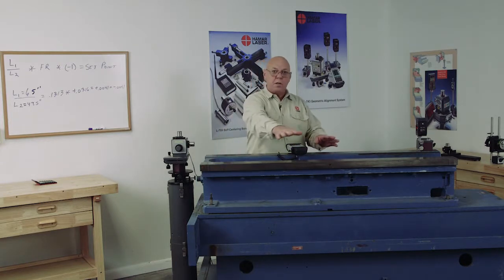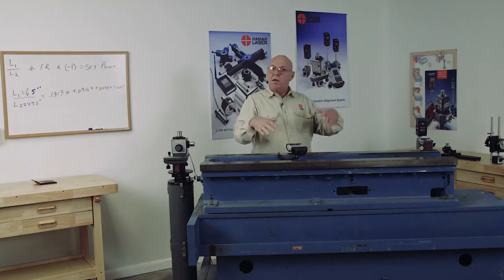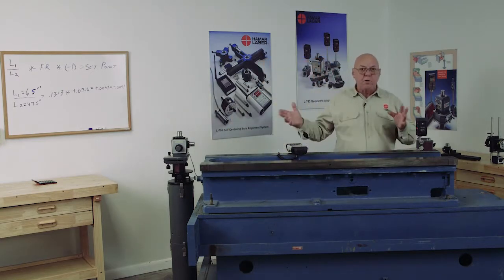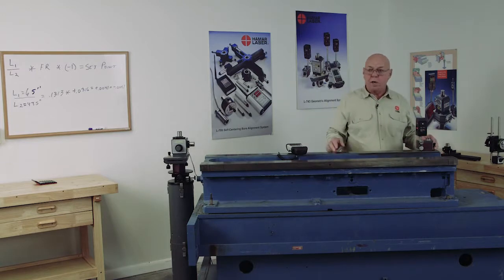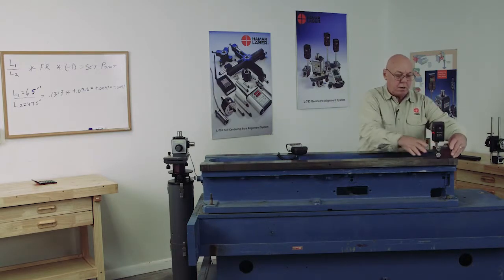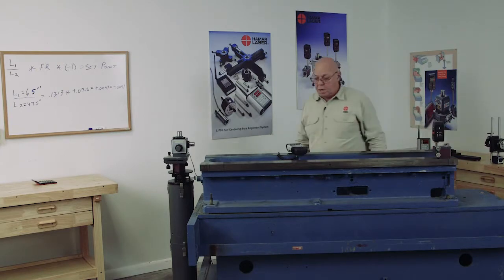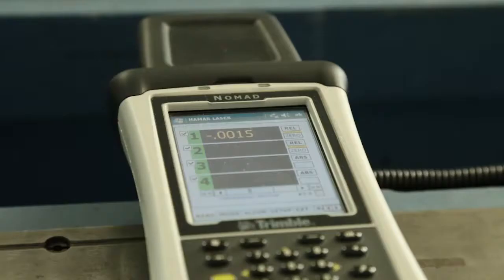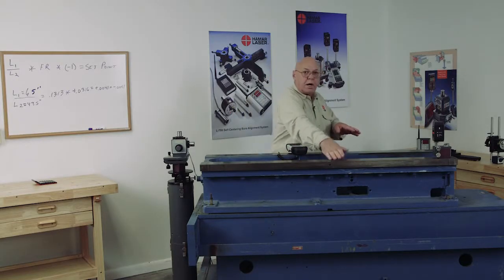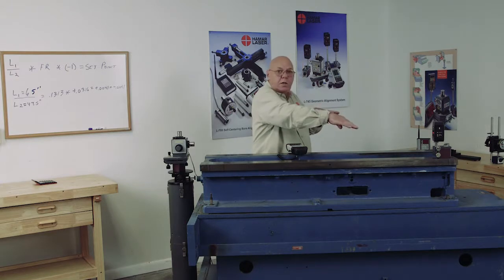Now I can check any place on this base. If I'm high, I'll get a plus number. If I'm low, I'll get a negative number. What I'd like to do first is check the four corners. I know these three corners are zero. I'm going to check over here. And over here, I'm reading minus one and a half thousandths. So I know this rail is not parallel to this rail. It runs downhill.